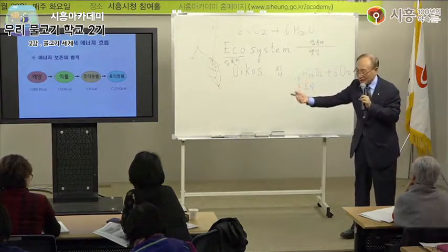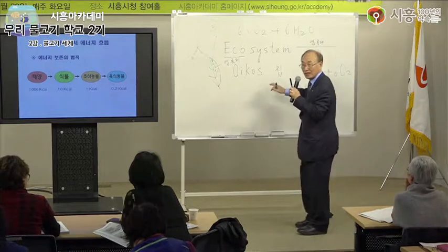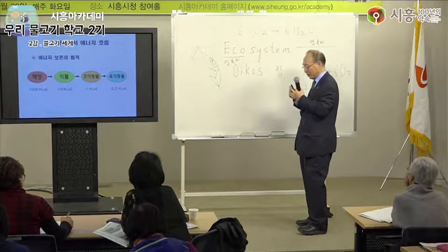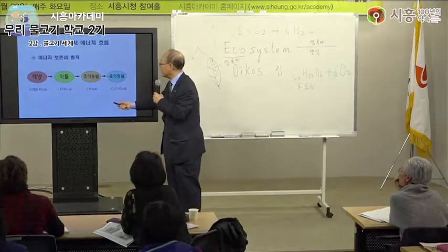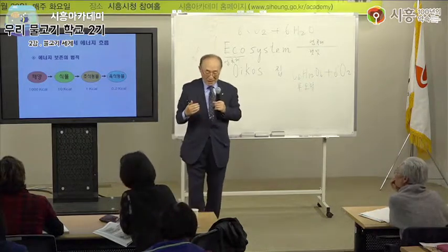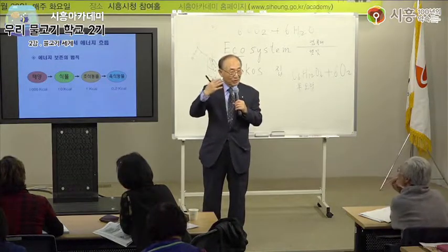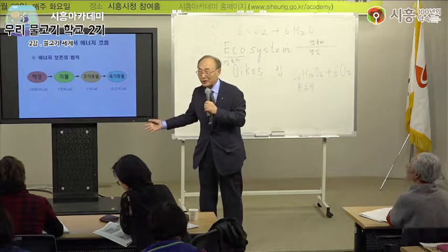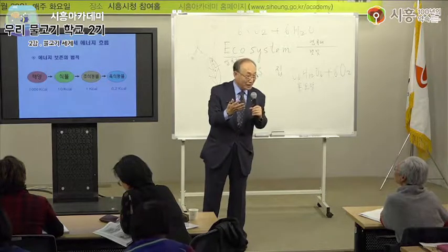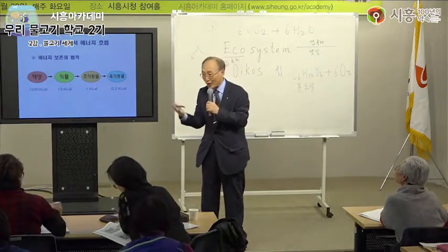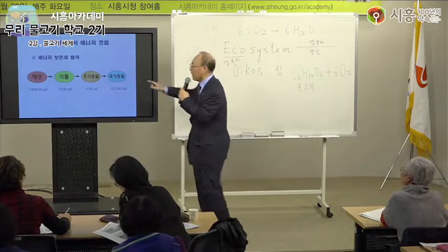최초로 식물들이 태양 속에 들어있는 에너지를 식물체 속에 저장합니다. 탄수화물 1g을 산화시키면 약 4칼로리가 나오고, 단백질도 약 4칼로리, 지방은 약 9칼로리가 나옵니다. 그 칼로리가 어디서 왔느냐 하면 태양에서 온 것입니다.